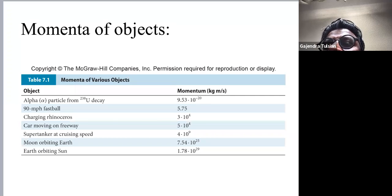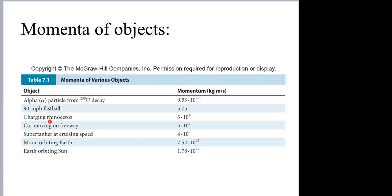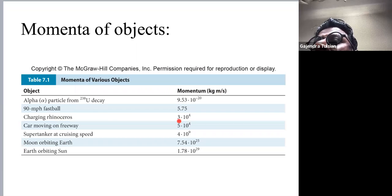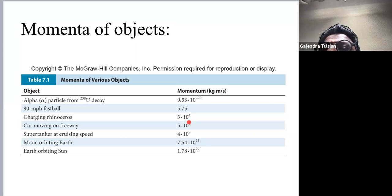This slide gives you the momentum of some objects in SI units (kilograms meters per second). A 90 mile-per-hour fastball has a momentum of about 6 units. A charging rhino has a momentum of about three times ten to the four — roughly 10,000 times greater. So if you want to stop a rhino in the same amount of time as a fastball, it's 10,000 times harder and you need a much greater force.